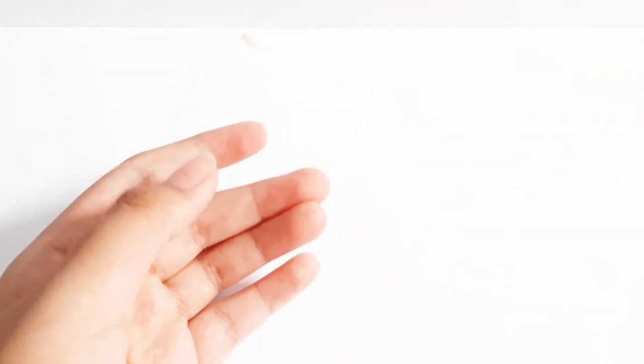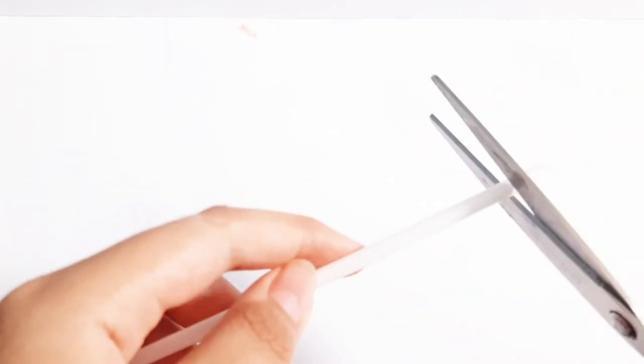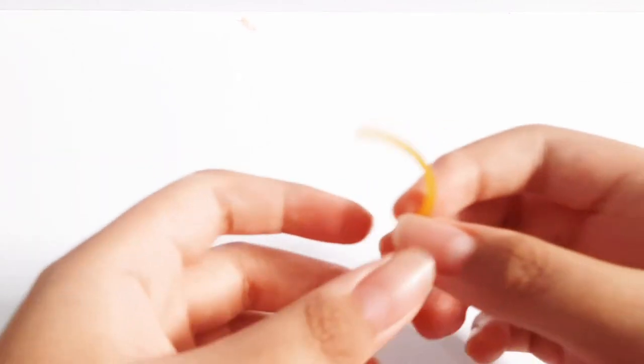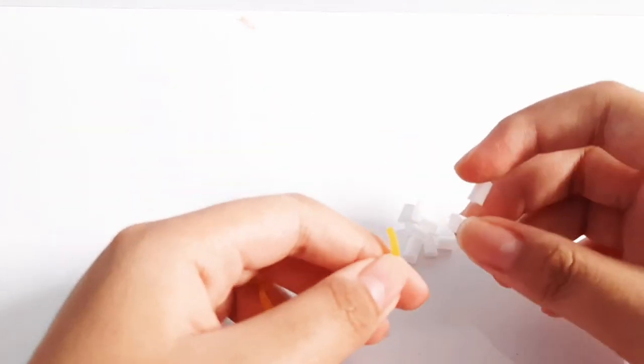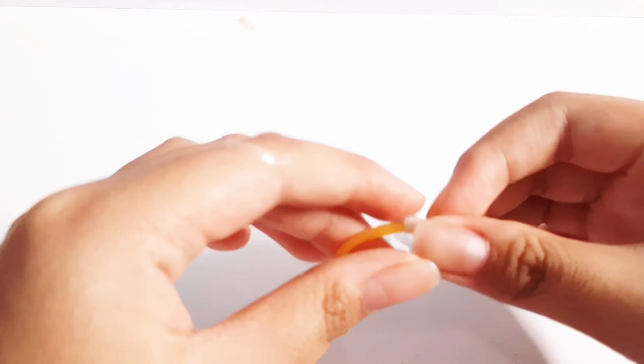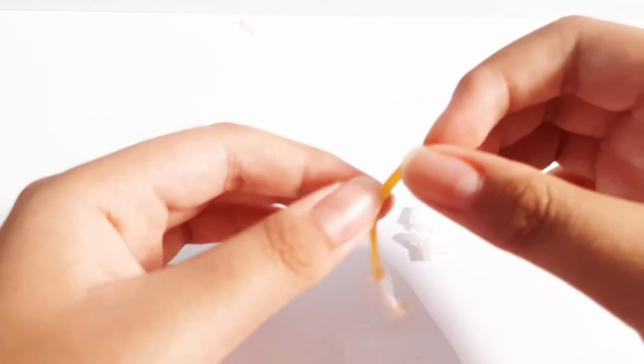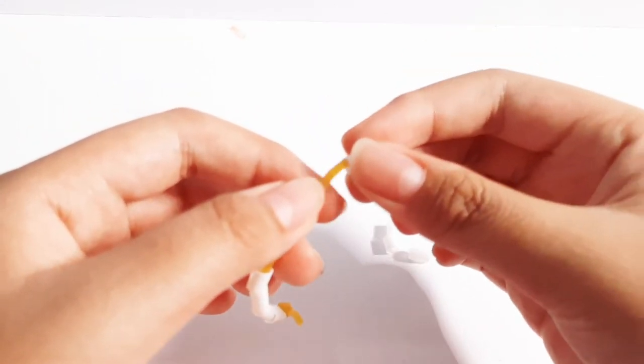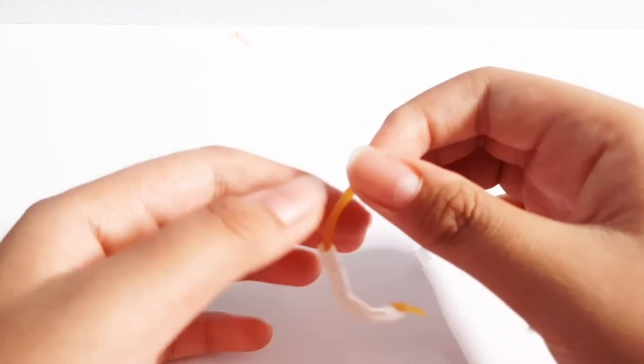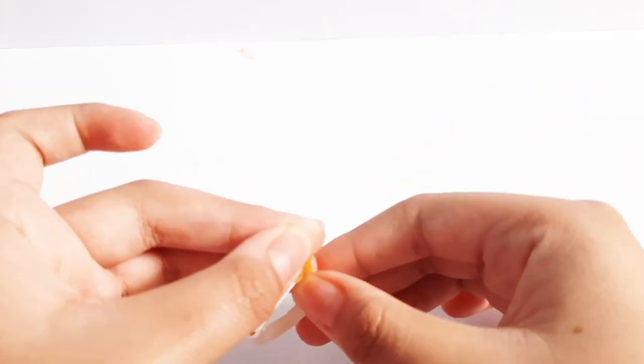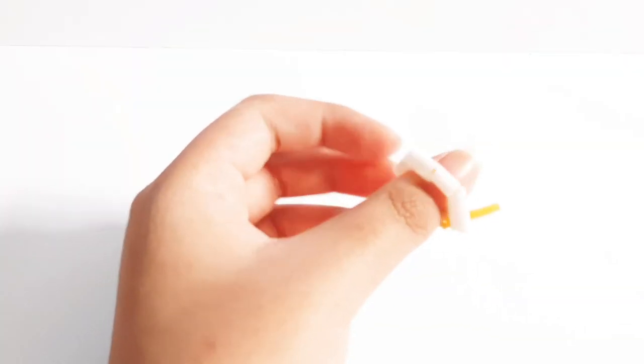Now put this to the side and take your straw and cut it into little pieces like this. Now take your rubber band and put your straws on the rubber band just like this. Tie the ends together and you have yourself a little finger ring.